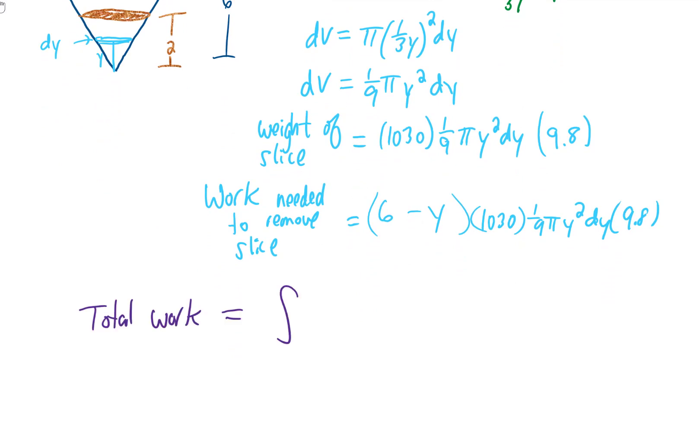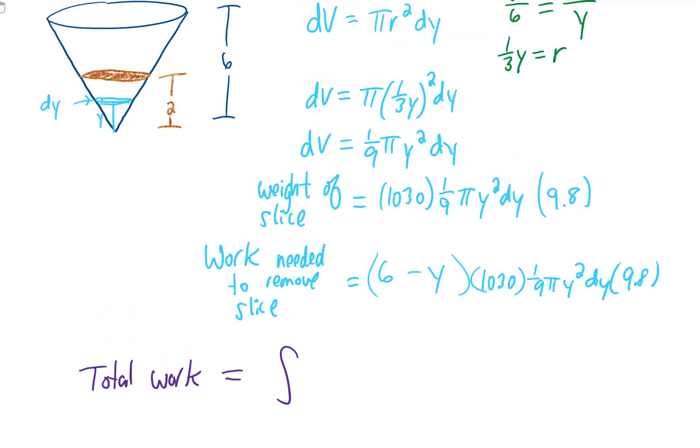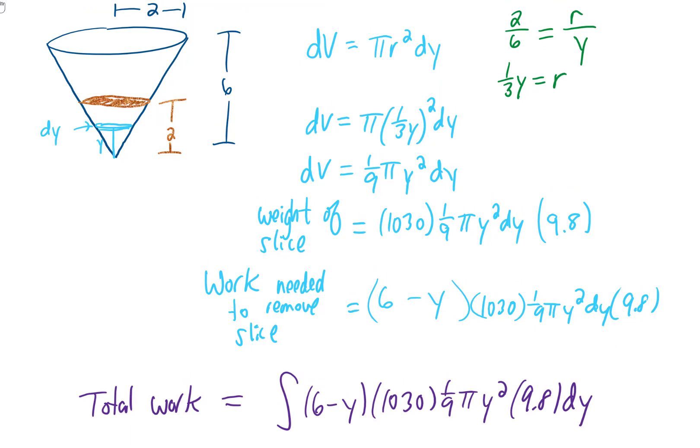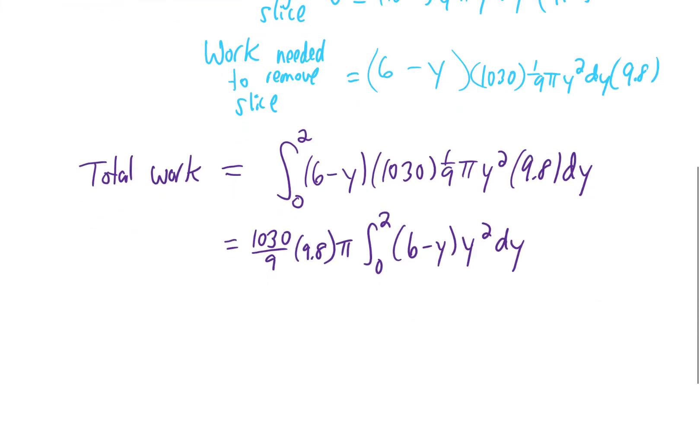And now finally, the total work that we're gonna do to remove all of the slices is just the sum of all of the works that we needed to do to remove one of those slices. That means we're gonna integrate for all possible values of y in this little cone of hot chocolate. The smallest possible value of y is zero, and the largest possible value of y is two. So there it is, that is our integral. We can take all of the constants out of it, and we get this integral right here.